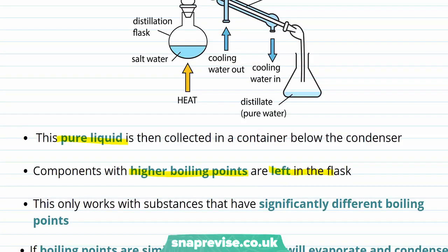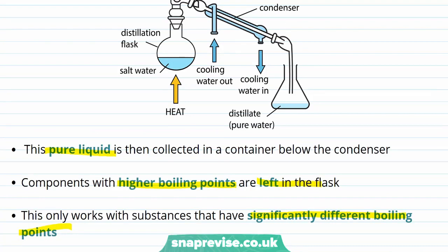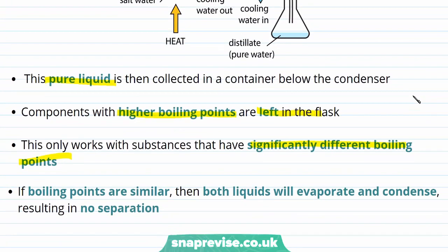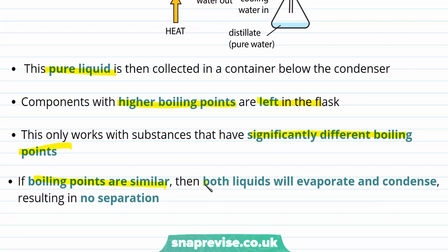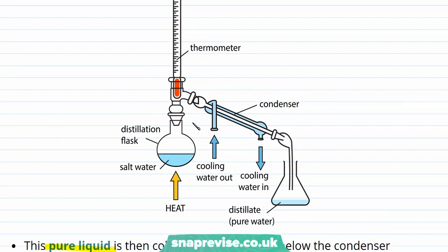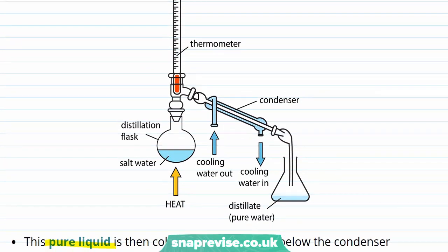This simple distillation method can therefore be used to separate substances that have significantly different boiling points to each other. If a mixture is made up of two liquids which both have similar boiling points, then both liquids will evaporate and then condense, and there will be no separation — the mixture will just move from one flask to the other. Simple distillation is useful for getting pure water out of salt water because the salts dissolved have boiling points that are thousands of degrees, so the only component that vaporises and then condenses is the pure water.